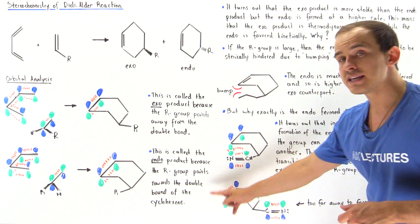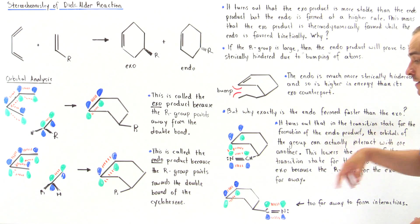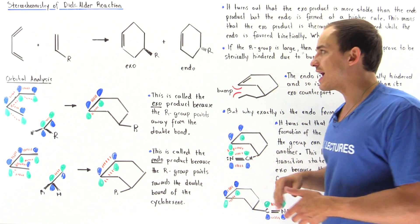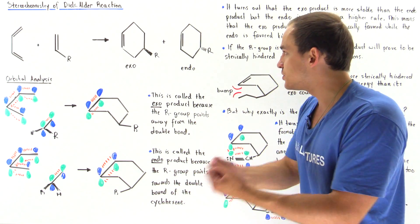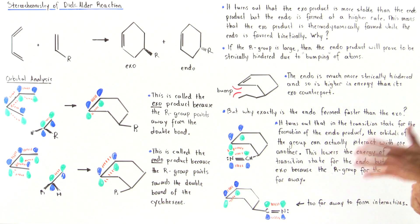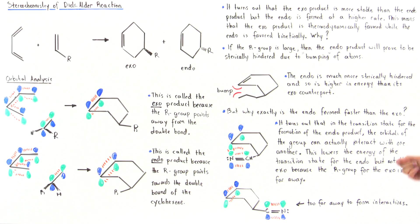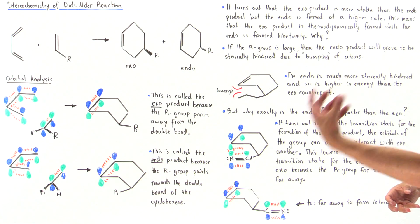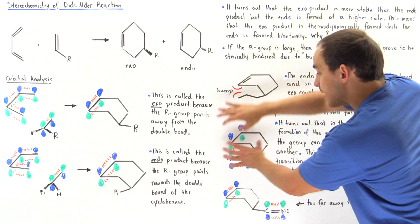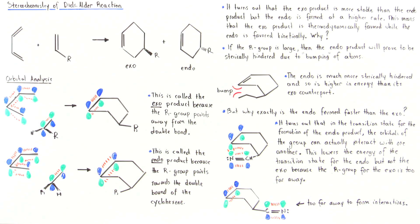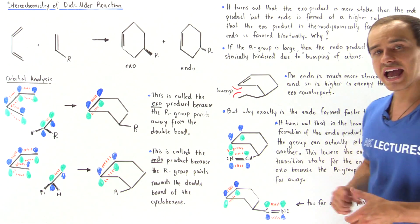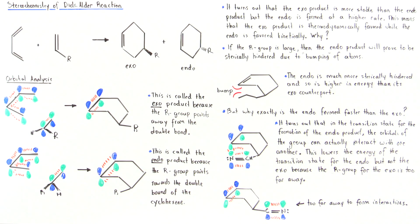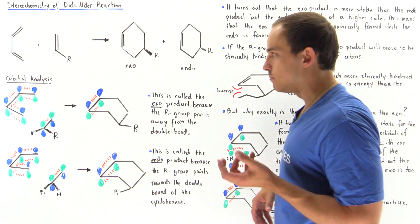In contrast, for the exo transition state, the R group is far away from those orbitals, so no stabilizing interaction takes place. In the endo transition state, the orbitals of the R group can interact with one another and stabilize the transition state, lowering its energy. For the exo case, the R group is simply too far away to interact in any stabilizing way, so the transition state for exo formation remains higher in energy.